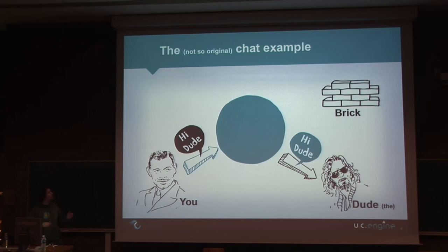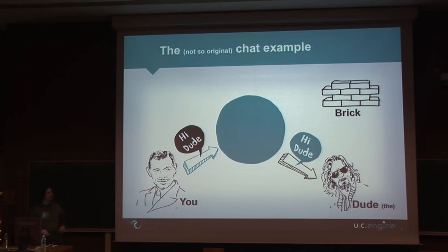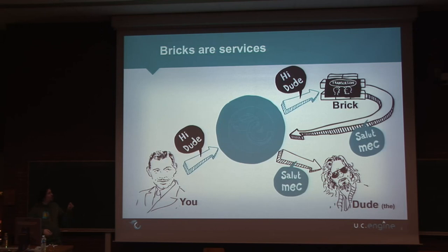Starting with a classic: the chat example. Let's imagine you want to chat with a friend — how do you manage to do this with UCEngine? It should not be more difficult than sending an event to your friend, and that's exactly how it works. Let's say you're not fluent enough to speak with your French neighbor, so you want to automatically translate your sentences to the appropriate language. You write a daemon client which subscribes to all chat events, asks Google for the translation, and then pushes a new event to your friend. It's simple.